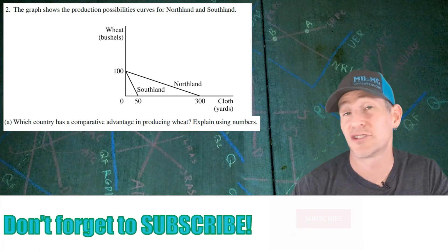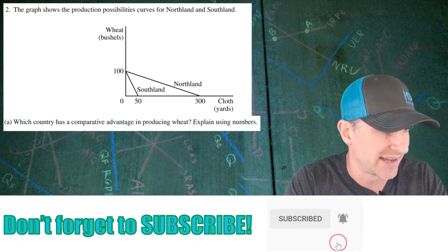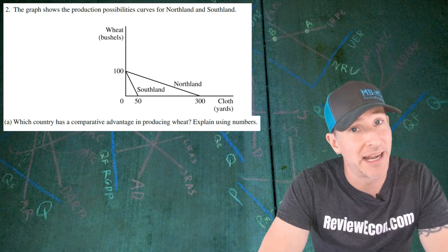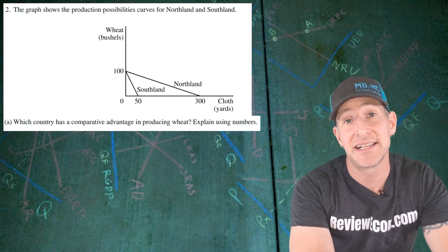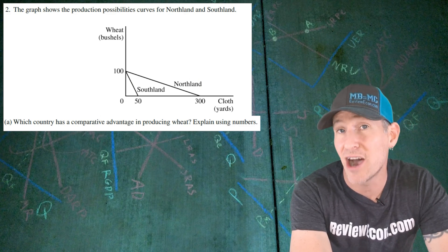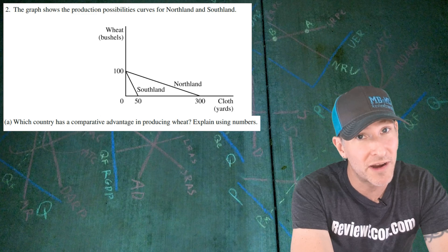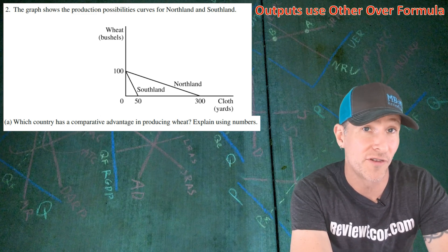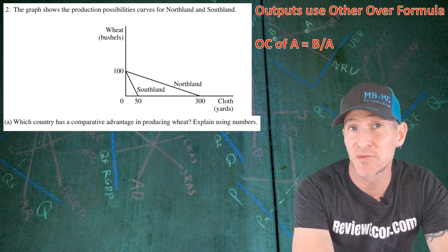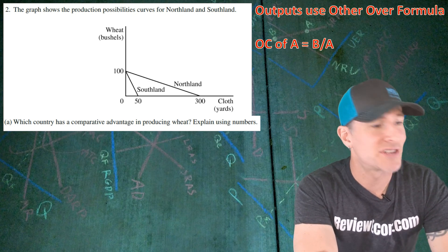This question starts off with two production possibilities curves — one for Northland and one for Southland. First, we are asked which country has the comparative advantage in the production of wheat, and we have to explain using numbers. Since these are production possibilities curves, these numbers are outputs. When it comes to calculating opportunity cost, which is what we need to figure out comparative advantage, we are going to use the other-over formula. That means the opportunity cost of A equals the numbers for the other one, B divided by A.